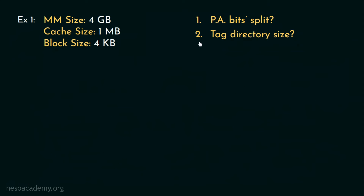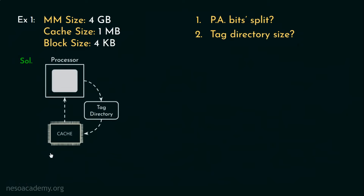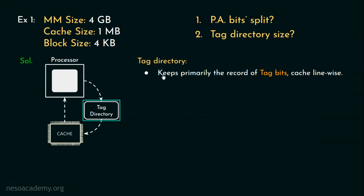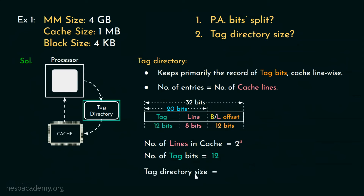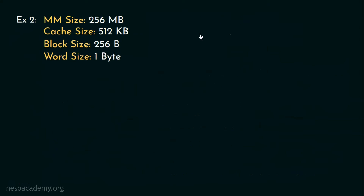Now for the second part — finding the tag directory size. The tag directory is a data structure used by the processor to find data in cache; it keeps a record of tag bits cache line-wise. The number of entries in the tag directory equals the number of cache lines, which is 2 to the power 8. Each entry holds 12 bits of tag information. Therefore the tag directory size is 2 to the power 8 multiplied by 12 bits, which results in 3072 bits.